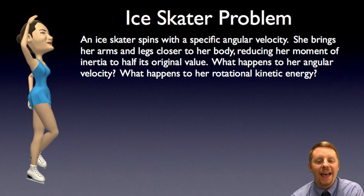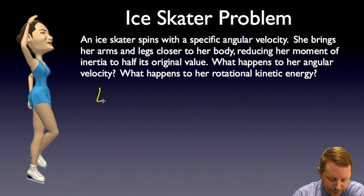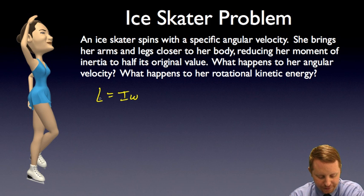Since there's no external net torque, her spin angular momentum has to remain constant. The law of conservation of angular momentum. Therefore, her angular velocity must double, since L equals I omega. If L is constant, I goes down, omega must go up.